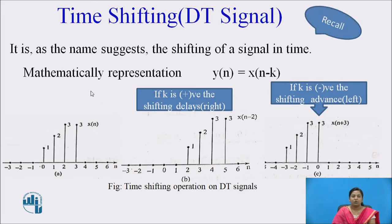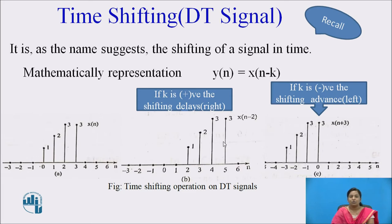Before moving ahead, please recall the time shifting operation on DT signals. In the time shifting operation, it is mathematically represented as y(n) = x(n - k). If the k is a positive value, then the shifting delays the signal, meaning the signal will shift towards the right side. If k is a negative value, then minus minus becomes plus, giving x(n + k), and the signal will shift towards the left side, which means it advances the signal.